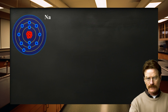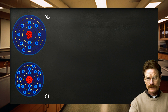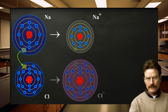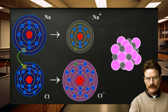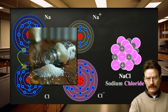A great deal of chemical activity involves the transfer of electrons from one substance to another. An electron transfers from a sodium atom to a chlorine atom, forming a sodium plus ion and a chlorine minus ion. Because objects of opposite charge attract, the Na+ and Cl− ions bind together to form sodium chloride — common table salt — an example of an ionic compound made up of cations and anions.